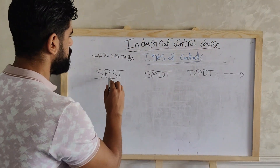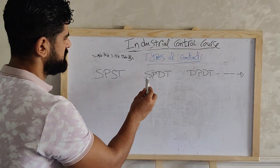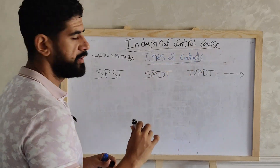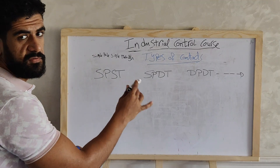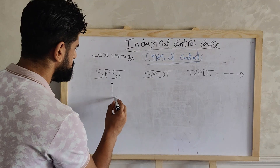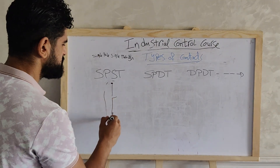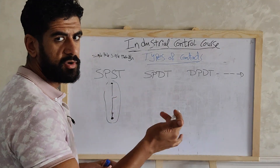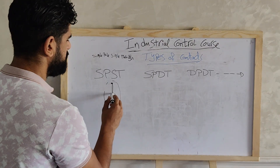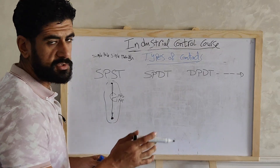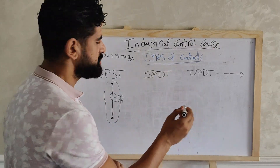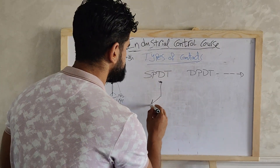Now let's look at another classification for types of contacts. We have single pole single throw (SPST), single pole double throw (SPDT), double pole single throw (DPST), double pole double throw (DPDT), and so on. A single pole single throw switch has a single input and a single output — either normally open or normally closed. A single pole double throw switch has a single input and two outputs.